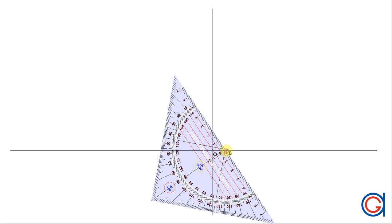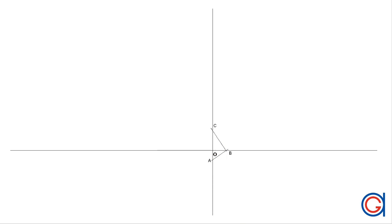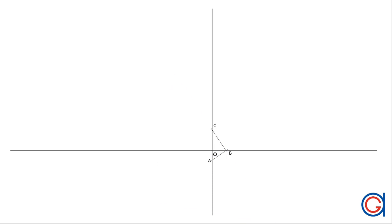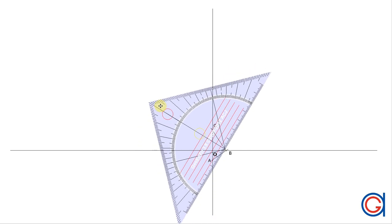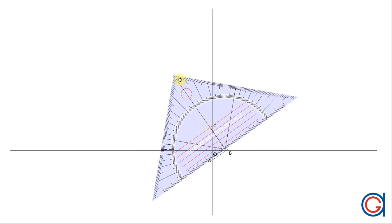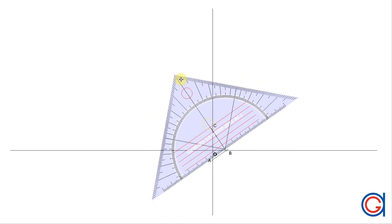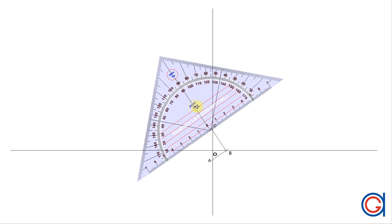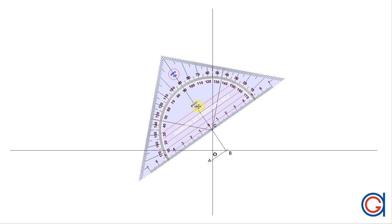Next we draw a perpendicular line to the line segment AB until it cuts our vertical axis at a new point C. Then we draw a perpendicular line to the line segment BC until it cuts our horizontal axis at a new point D, as can be seen here.